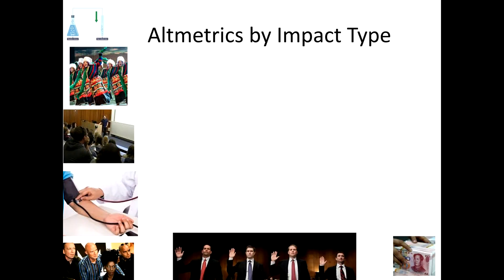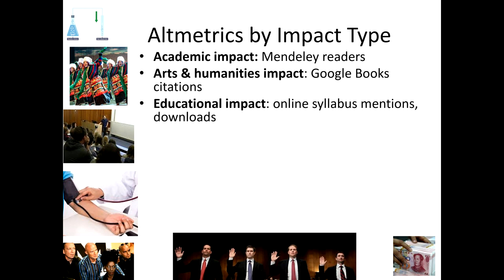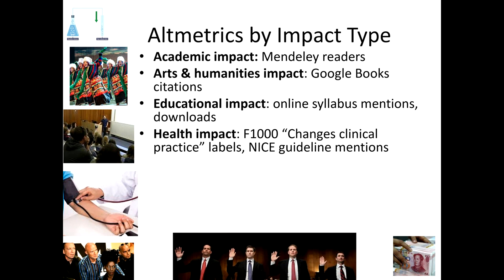I'd like to look at some types of altmetrics by the nature of the impact that they seem to reflect. Academic impact is reflected by Mendeley readers. Arts and humanities impact — Google Book citations would be a good altmetric for that. Educational impact could be reflected by mentions of academic research in online syllabuses or downloads.